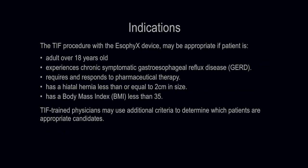The TIF procedure with the EsophyX device may be appropriate if the patient is an adult over 18 years old, experiences chronic symptomatic gastroesophageal reflux disease (GERD), requires and responds to pharmaceutical therapy, has a hiatal hernia less than or equal to 2 centimeters in size, has a body mass index (BMI) less than 35. TIF-trained physicians may use additional criteria to determine which patients are appropriate candidates.